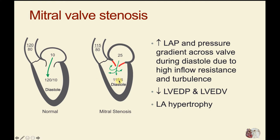When this occurs, the ventricle will not contract as forcefully, so its peak systolic pressure might also be reduced — about 115 in this example — and that would lead to a reduction in aortic systolic pressure. To summarize with mitral valve stenosis, we will see an increase in left atrial pressure and the pressure gradient across that valve during diastole due to the high resistance of that valve.